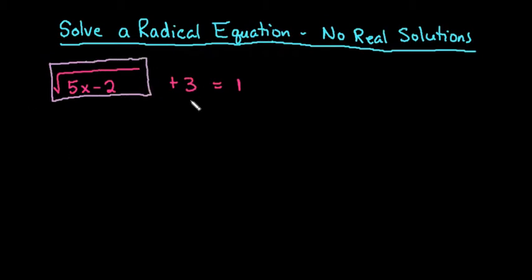As you can see, it is not, so what we would have to do is subtract the 3 from both sides. When we do that, we end up with the square root of 5x minus 2 equals negative 2.